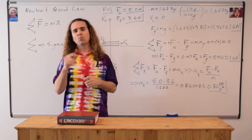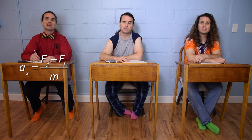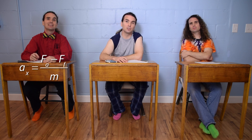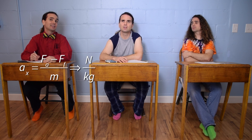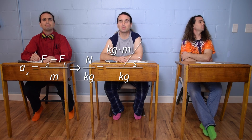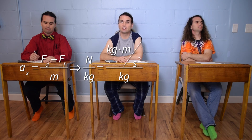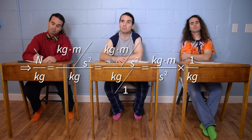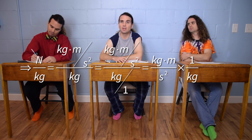Could you explain how the dimensions for acceleration work out to meters per second squared? Dimension-wise, acceleration ends up being Newtons divided by kilograms. We substitute kilograms times meters per second squared for Newtons, then multiply by 1 over kilograms — the kilograms cancel out, leaving just meters per second squared.